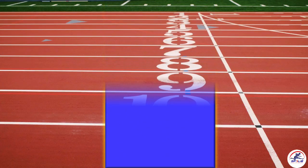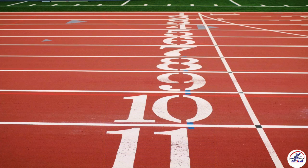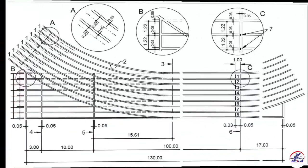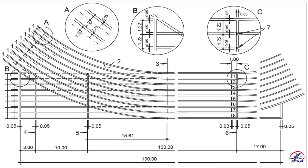Here you can see a track with 11 lanes at the home stride. Before going to see the marking, have a glimpse at the 400m standard track home stride.